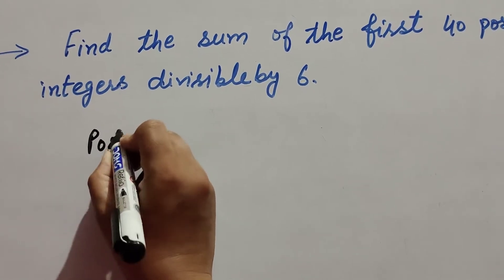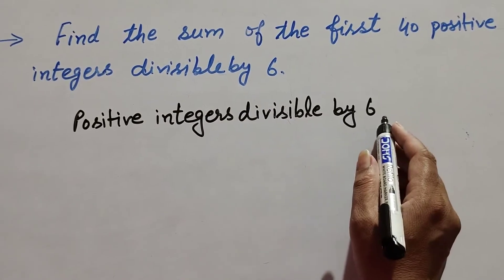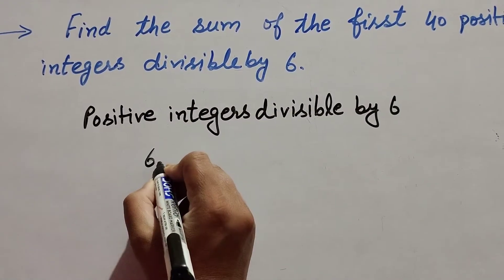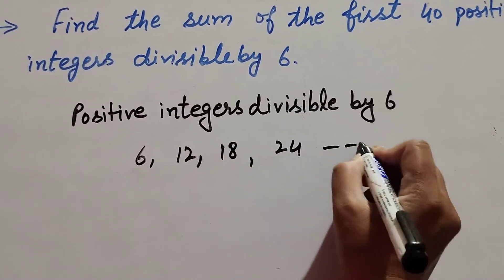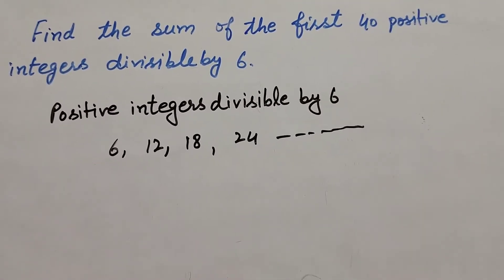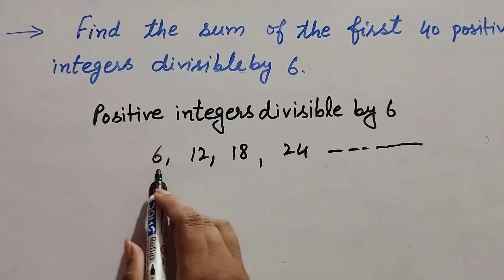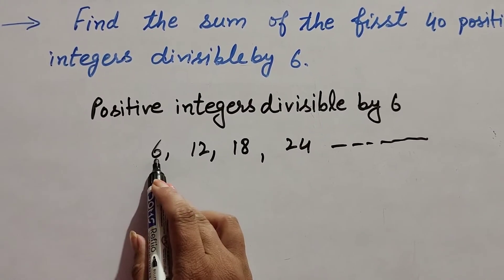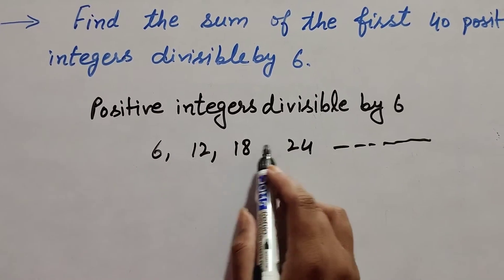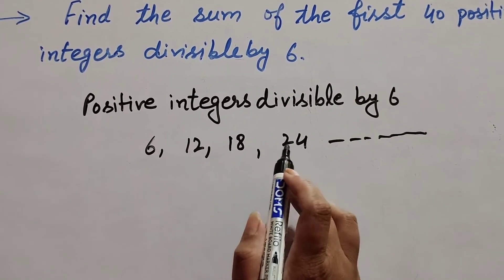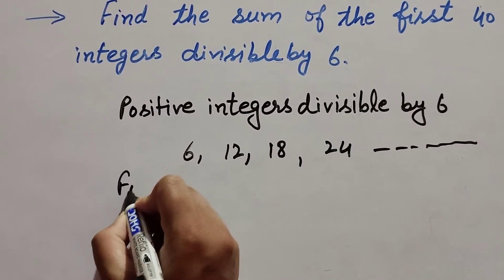The positive integers divisible by 6 are: 6, 12, 18, 24, and so on. Here, the second term minus the first term gives 12 minus 6 equals 6, and 18 minus 12 equals 6, and 24 minus 18 equals 6. Since the common difference is the same, they form an AP.